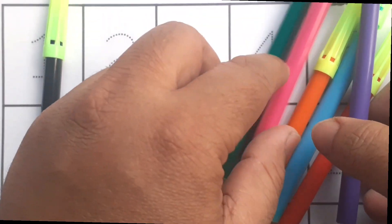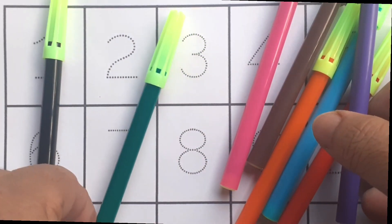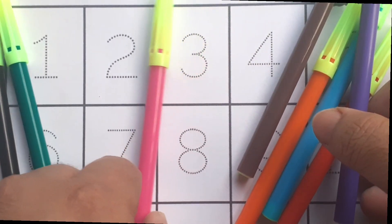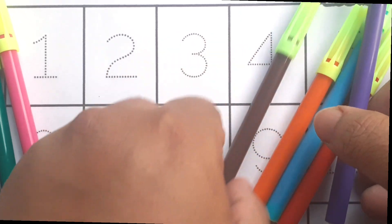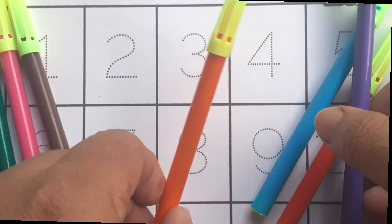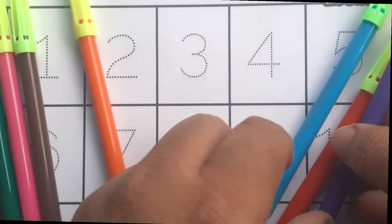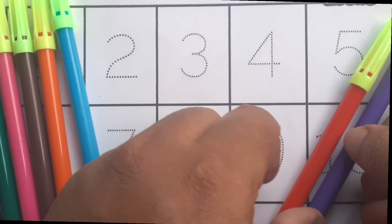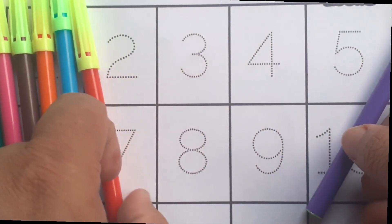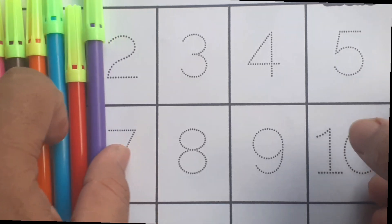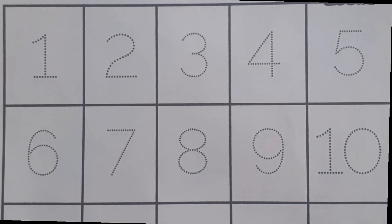This is a black color, green color, pink color, brown color, white color, blue color, red color, violet color. Let's start practice.